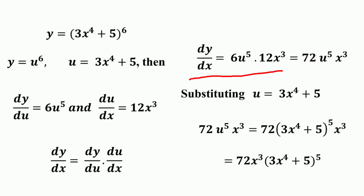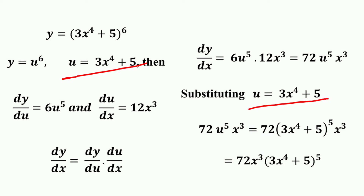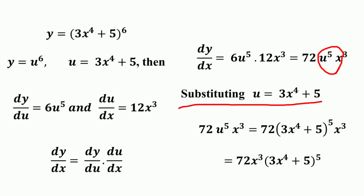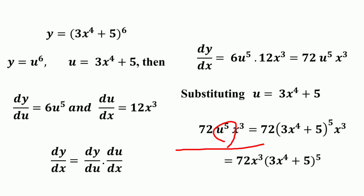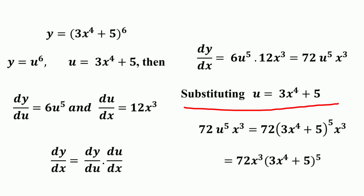So dy/dx is equal to 6u⁵ into 12x³, which equals 72u⁵x³. Since u equals 3x⁴ + 5, substituting this value gives 72 into (3x⁴ + 5)⁵ into x³, which equals 72x³(3x⁴ + 5)⁵.